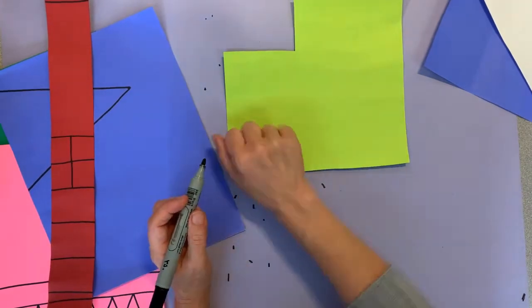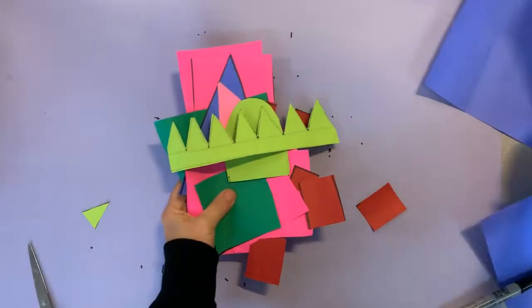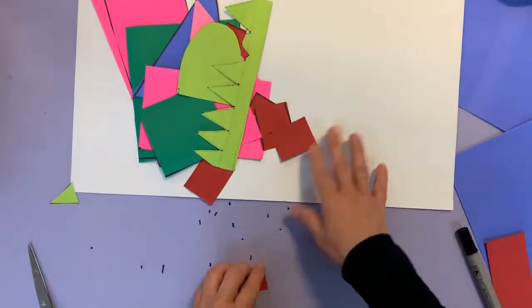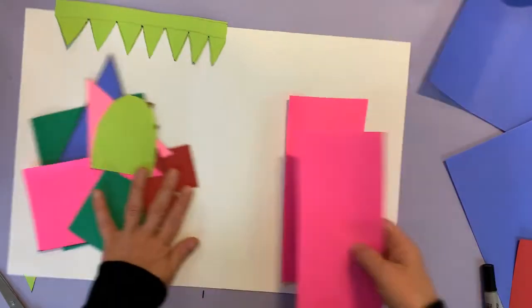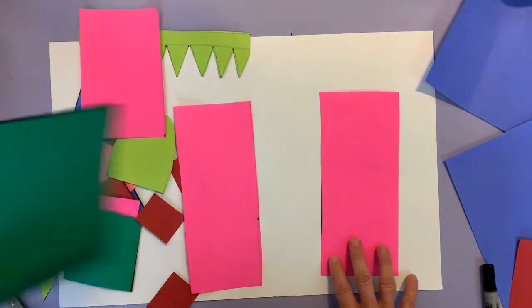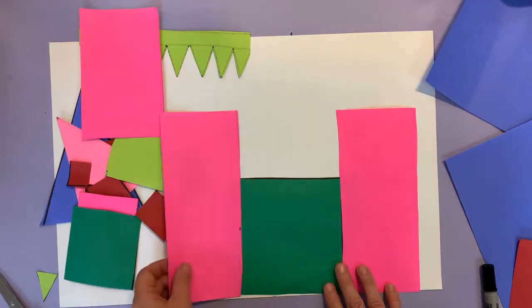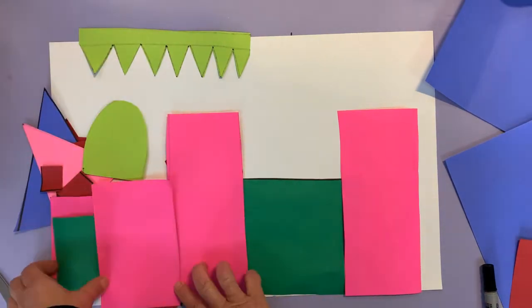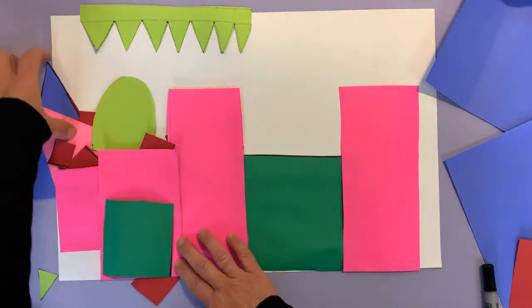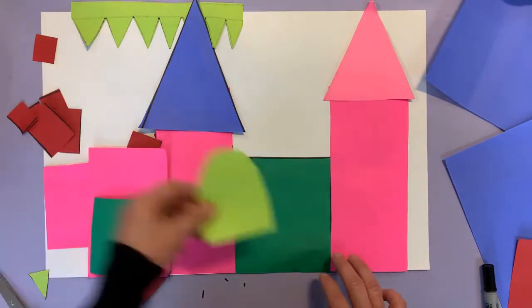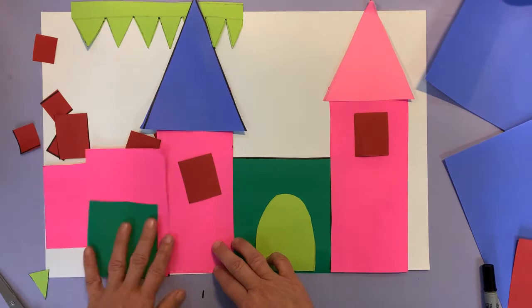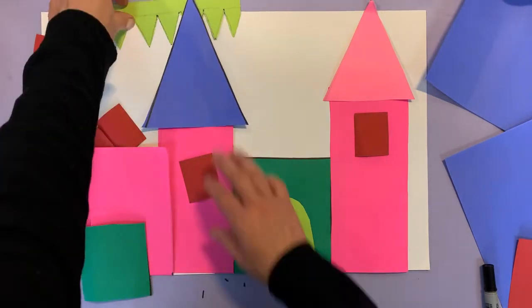Now you can create your own castle using all different materials. You don't need to use just construction paper - you could use newspaper, brown paper, or cardboard. You can mix your materials - use sharpie and colored paper, or crayons and watercolor. Any materials that you have at home.